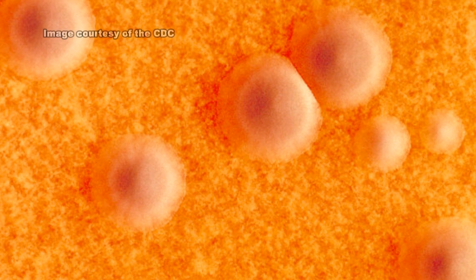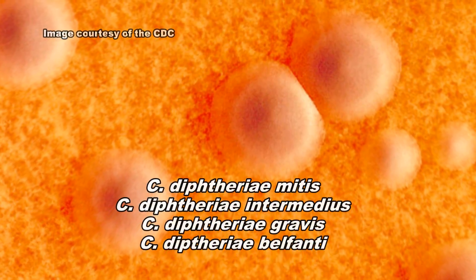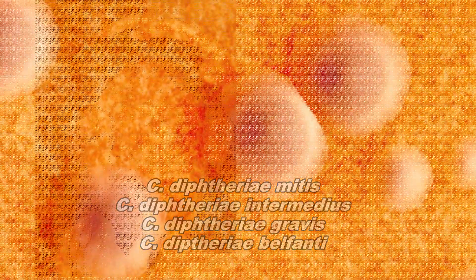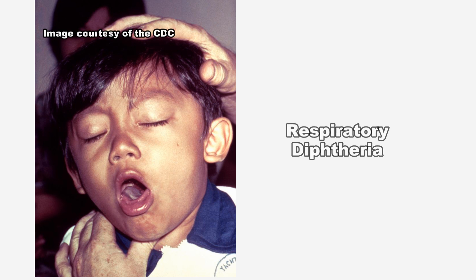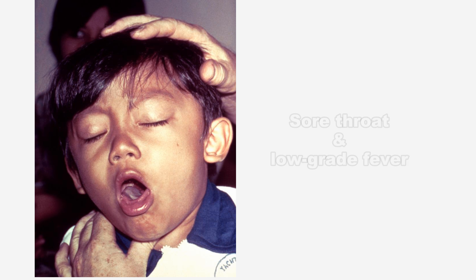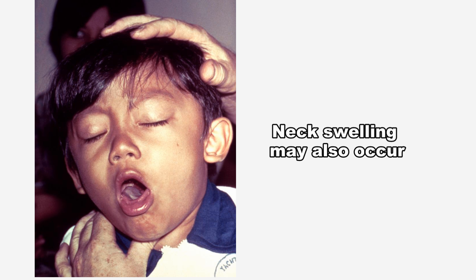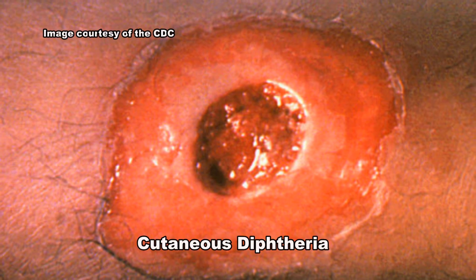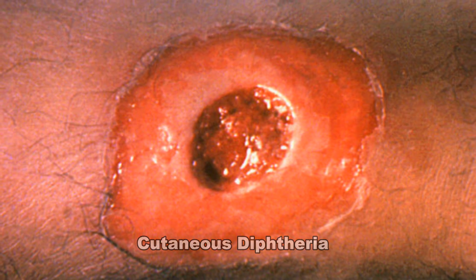Four subspecies of the bacteria are recognized. There are two types of the disease. With respiratory diphtheria, infected individuals may have a sore throat with low-grade fever and an adherent pseudomembrane of the tonsils, pharynx, or nose. Neck swelling is usually present in severe cases. Cutaneous diphtheria causes infected skin lesions which lack a characteristic appearance.